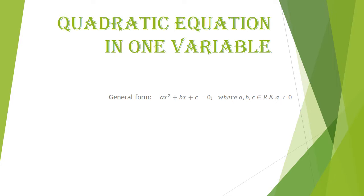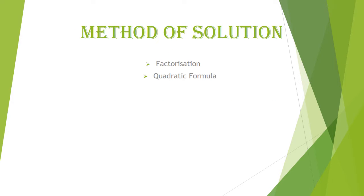A quadratic equation in one variable is an equation whose degree is 2. The general form of a quadratic equation is ax² + bx + c = 0, where a, b, c are real numbers and the value of a cannot be equal to 0. There are two methods of solving a quadratic equation: the first method is the factorization method.